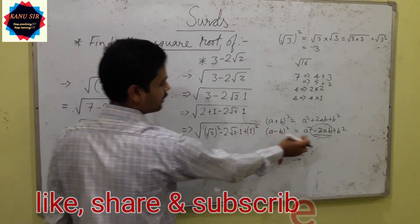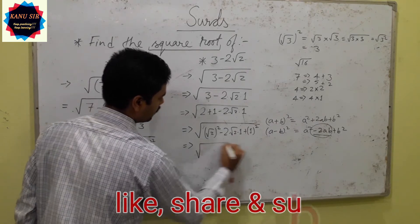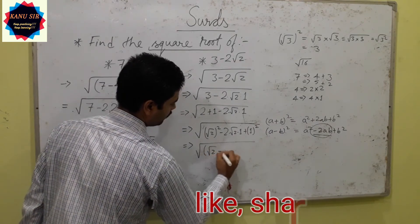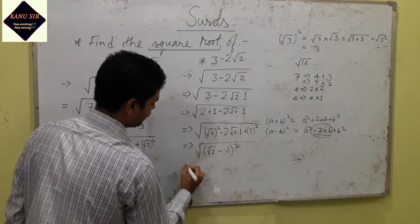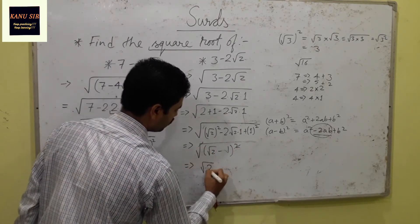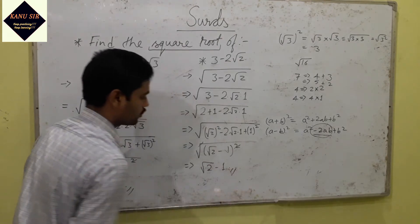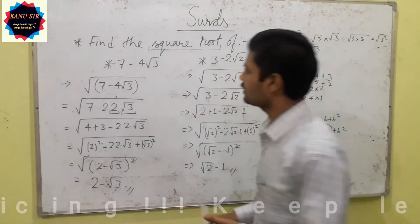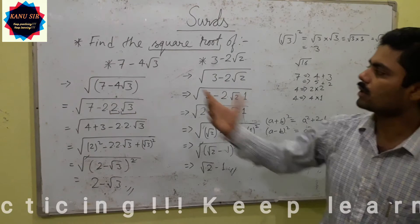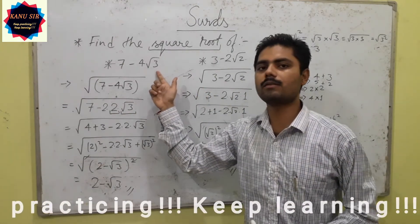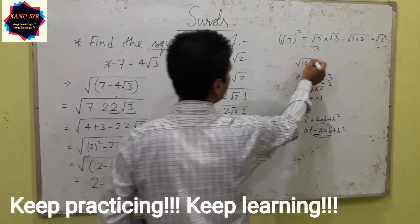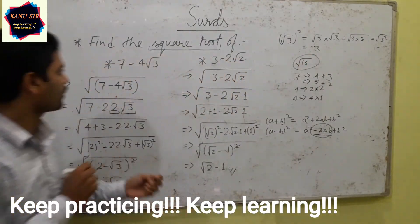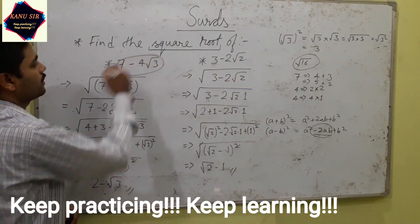Now it looks like the a minus b whole square formula. This way we can find the square root of terms containing irrational numbers. Normally we have done square root of simple numbers, but now we can do the square root of these types of numbers as well.